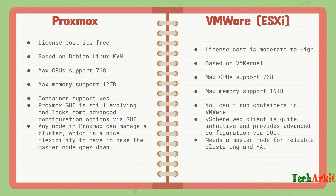For VMware, from a cost perspective, it is moderate to high — VMware is not cheap. You have to purchase a VMware license in order to install and use it in production. Proxmox is based on Debian Linux KVM, whereas VMware is developed on their own VM kernel.